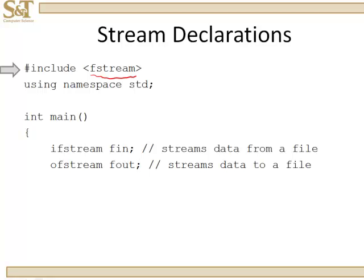How do you declare a stream from an input file? It's ifstream, which is short for input file stream, and then whatever you're going to name that object. In this case, I've named it fin — that's 'file in'. It's always the same format: a type and the name of the object. So ifstream fin creates a stream that will stream data from a file.